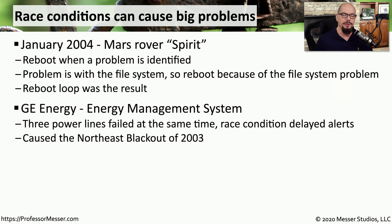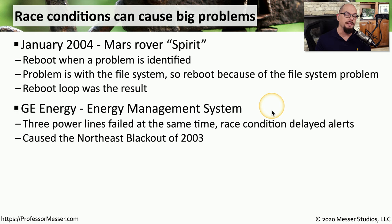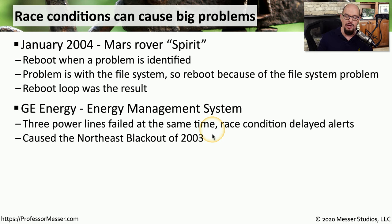Another race condition occurred in 2003 from the GE energy management system used to monitor electrical lines. Three power lines failed at the same time, but due to a race condition, only a limited number of alerts was shown to technicians. This quickly got out of hand and caused the Northeast blackout of 2003. It took a week or two for power to be restored, and it affected 10 million people in Ontario and 45 million people in the Northeast United States.